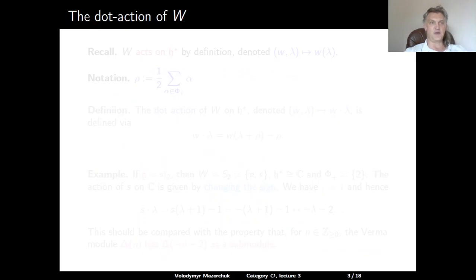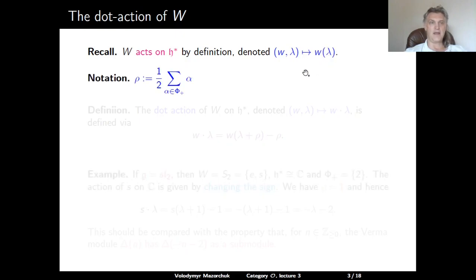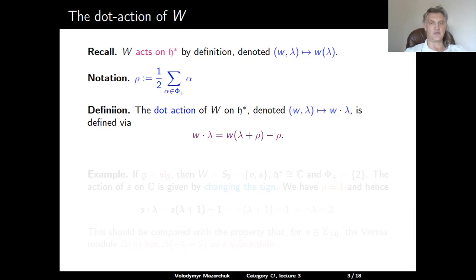Let us start by defining the dot action of the Weyl group. The Weyl group of a root system in H* acts naturally on H* with the usual notation that W acts on lambda as W(λ). Denote by ρ the element of H* given by half of the sum of all positive roots, and define the dot action of W on H* as the usual action but shifted with respect to ρ: W·λ is defined as the usual action of W at the element (λ + ρ) minus ρ. This is an affine action obtained from the original linear action by shifting the origin from zero to minus ρ.